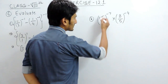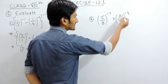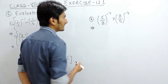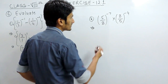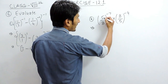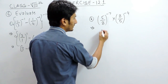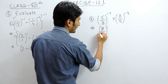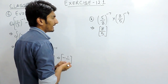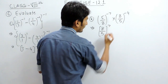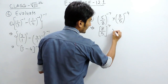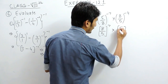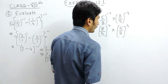Now let's solve the second part. Here it is 5 upon 8 raise to power 7, multiplied by 8 upon 5 raise to power 4. First of all, convert these powers into positive. We know that whenever there is a fraction with a negative power, if we exchange denominator and numerator, its power becomes positive. Similarly here, 8 upon 5 raise to power minus 4 will become 5 upon 8 raise to power 4.